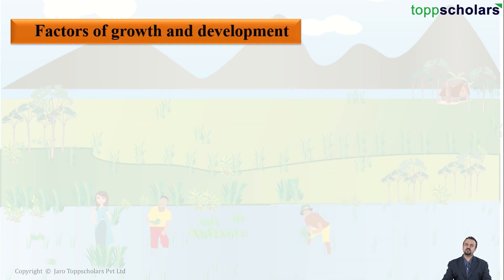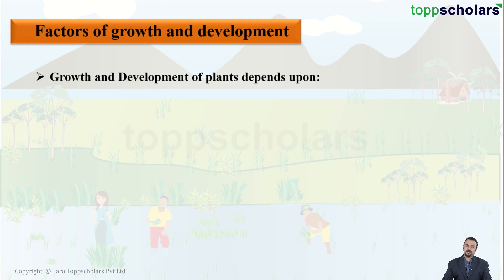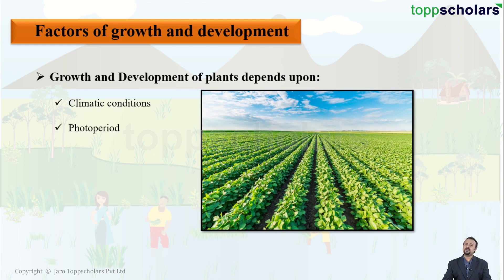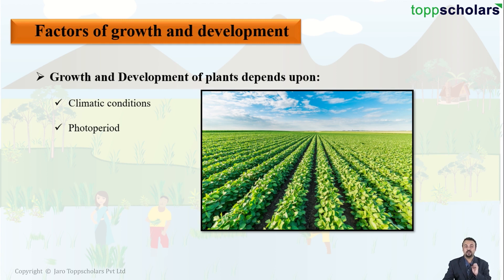Now let us turn our attention to the various factors which affect the growth and development of crops. Growth and development of crop plants depends mainly on climatic conditions. It also depends on the photo period. Every single species of plant depends upon a particular amount of daylight and a particular amount of darkness in one day. This requirement of daylight as well as darkness is called that plant's photo period, which is very important for the plant to grow normally and also to bloom.